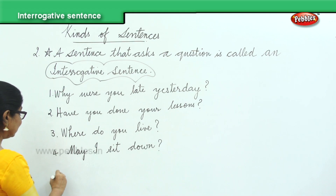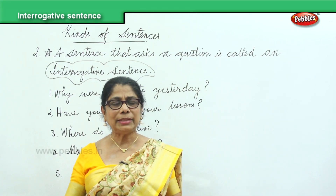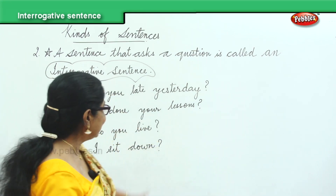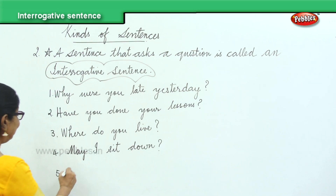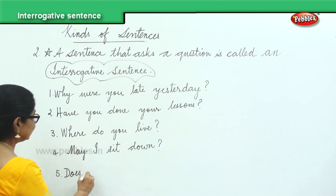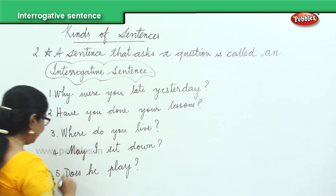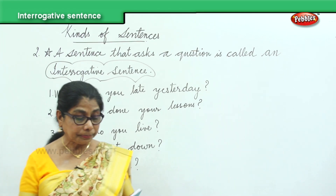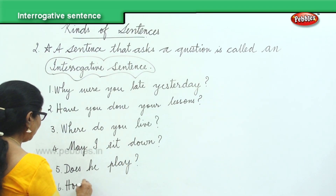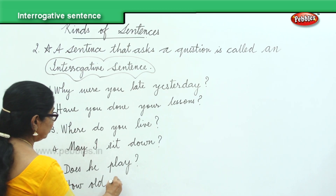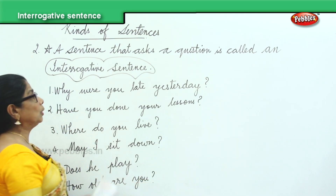If a teacher makes you stand in class, what will you ask? May I sit down? Or if you go somewhere, to somebody's house — May I sit down? Interrogative sentence, ends with a question mark, begins with a capital letter. Does he play? Question mark, begins with a capital letter. And finally: How old are you? It begins with a capital letter and ends with a question mark.